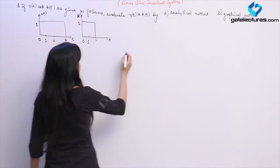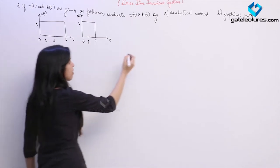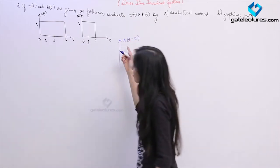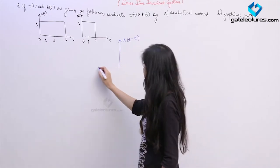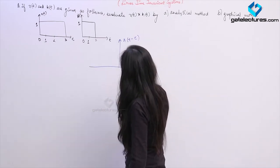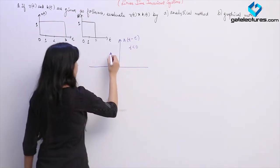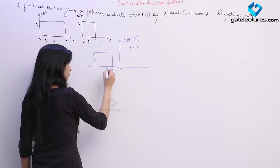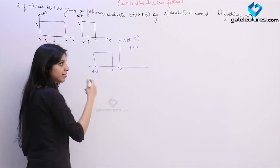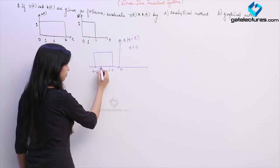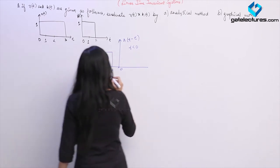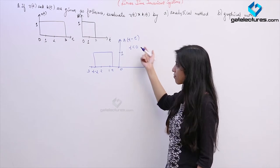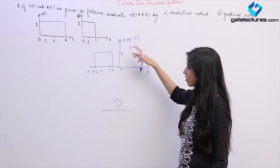So this is our x(t). I am sketching h(t−τ). Since we have taken several examples on sketching h(t−τ), I am doing this directly. If t is less than 0, this is how this signal is going to look like, with the value of 1. This is how our h(t−τ) is going to look like. We have just performed the same operations — first shifting, then reversing it.